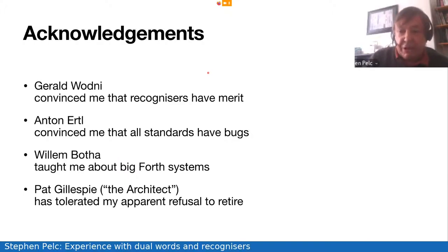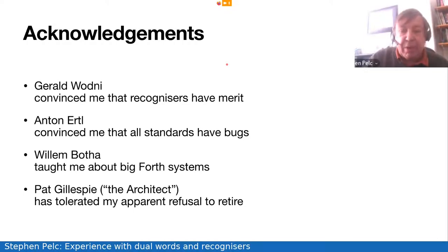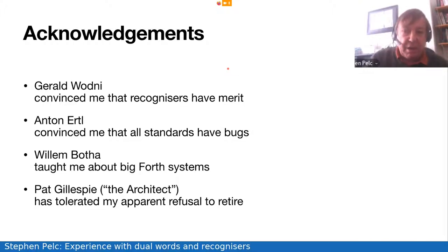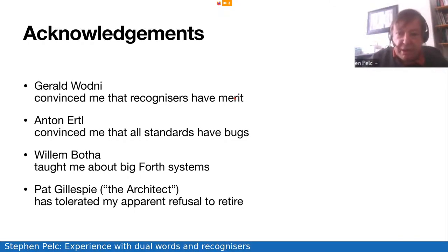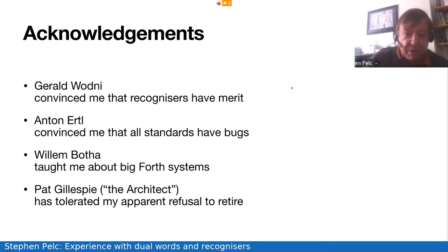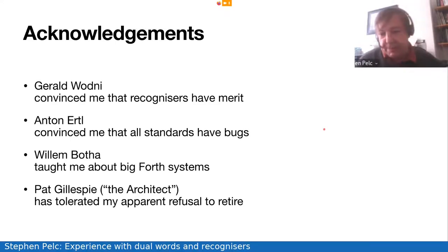Recognisers really do have merit, and Gerald and Anton have been going on at me for years about this — but they've won eventually. I'm now convinced that the only sane way to be able to use OOP packages within libraries is to do it through recognisers and search order control. Gerald convinced me that recognisers have merit, and Anton has convinced me, as always, that all standards have bugs. Willem Berter, who works for CCS, taught me most of what I know about really big Forth systems. And my wife Pat has tolerated my apparent refusal to retire.